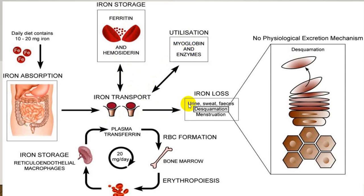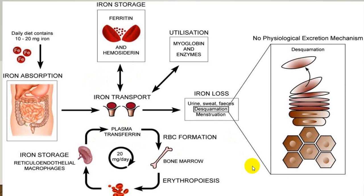There is a small quantity of iron lost through urine, sweat, feces, and mainly by desquamation — and in females, by blood loss during menstruation. RBC formation takes place in the marrow by erythropoiesis. Old RBCs are destroyed by the RE system in the spleen, and iron is delivered back in the form of plasma transferrin to bone marrow, spleen, and liver. This is how iron metabolism continues.